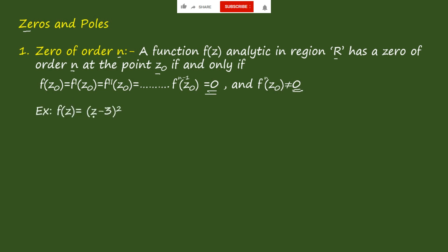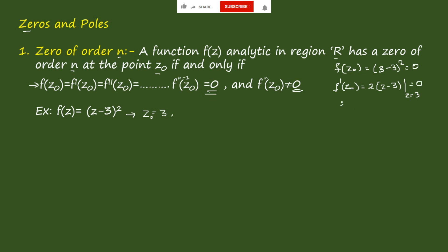To understand this, consider f(z) = (z − 3)². If we consider z = 3 as a zero, we check the special conditions. f(z₀) = (3 − 3)² = 0. Then f'(z) = 2(z − 3), and substituting z = 3 gives 0. Now f''(z) = 2, which is not equal to 0. So we can say that z₀ = 3 is a zero of order 2.